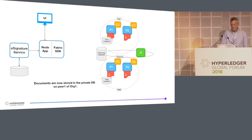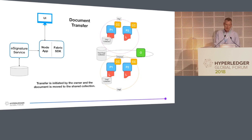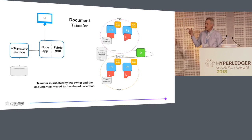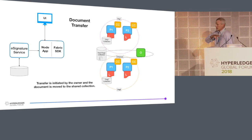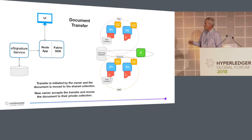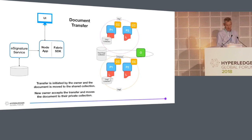During the transfer that we showed, the first step was to initiate the transfer, done by the org1 owner of the document. Behind the scenes, that document got moved from the org1 collection down to the collection shared between org1 and org2. Then Al went through and did a reject by the new owner, and then went back to the org1 user and did a cancel — that actually moved the document back to the org1 collection as a transaction. Then the second time he went through and accepted it, which ran a transaction that moved that document down to the org2 collection. And with that, that ends our conversation.